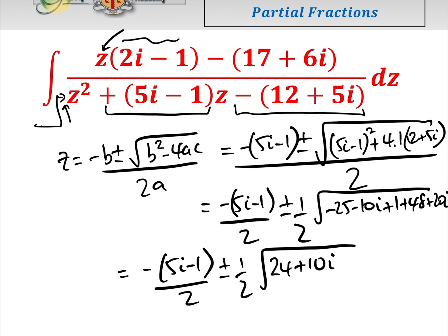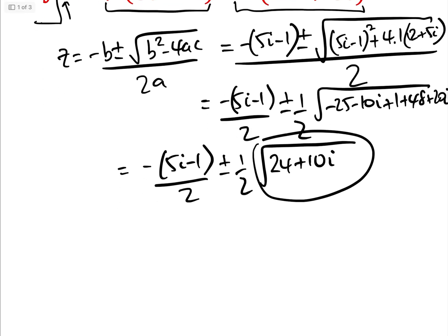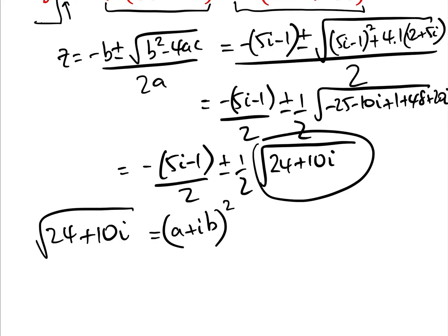Herein lies our second problem: we need to find the square root of a complex number. So basically what we do to find that is we say, we want to find the square root of 24 plus 10I. Let the square root be a plus IB, and therefore 24 plus 10I must equal (a plus IB) squared. And then, of course, the square root of 24 plus 10I would be a plus IB.